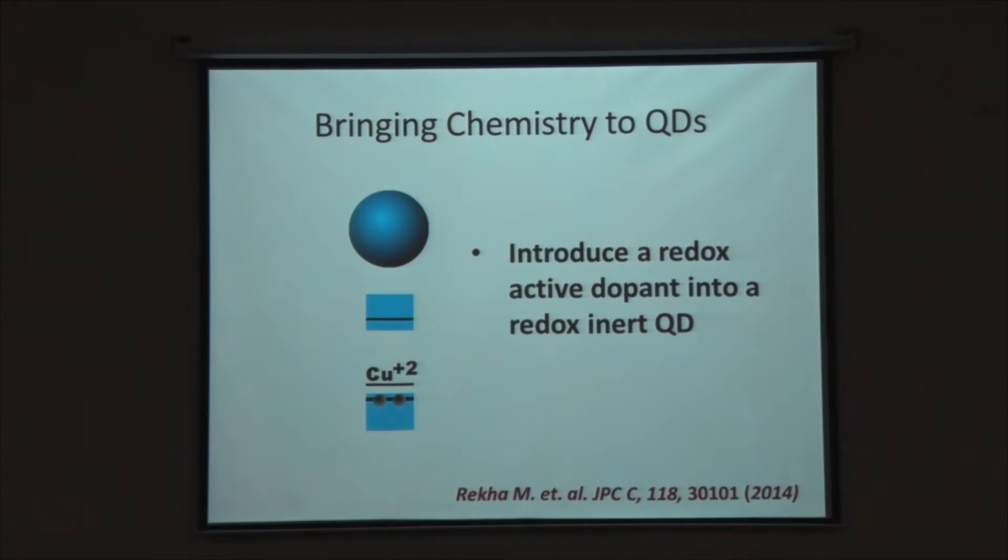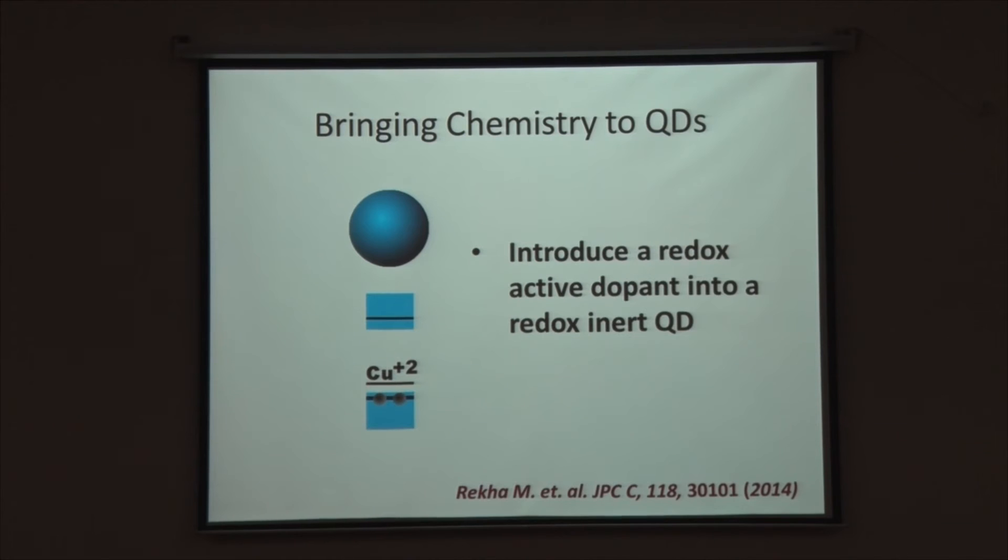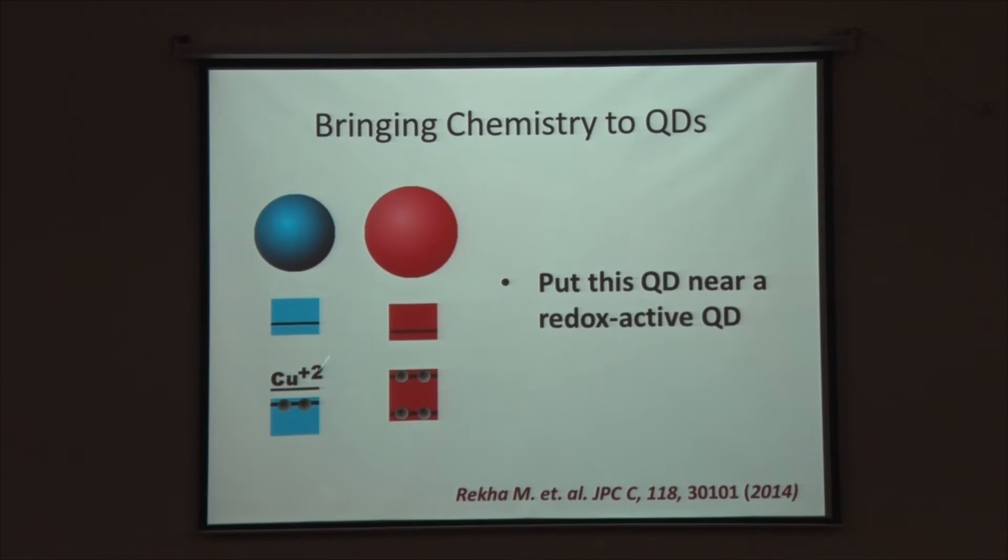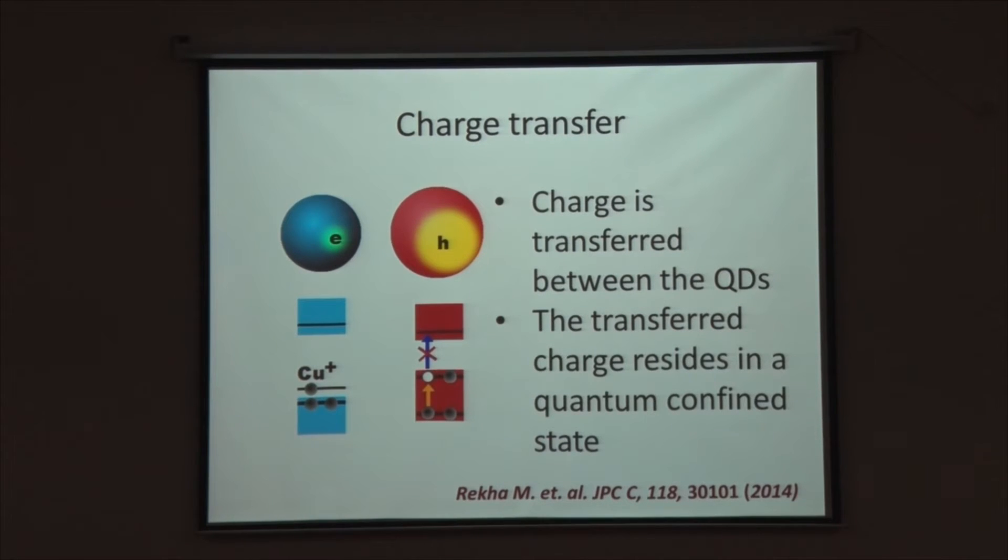Our approach was as follows. We start with a quantum dot made of a wide gap semiconductor and we introduce a dopant state into it. By default, this dopant state does nothing. It just sits there because it cannot interact in any way with the ground state. What do we do next? We bring another quantum dot, a different type of quantum dot close to it. The idea is to pick this quantum dot so that it can dump some charges into this dopant state. As soon as these two dots are brought close enough, immediately there is a charge transfer and we now have a charge separation.